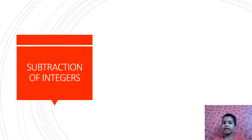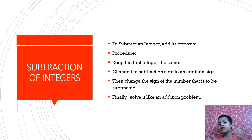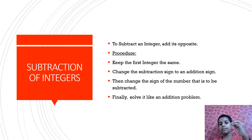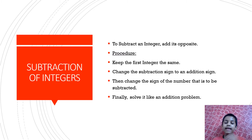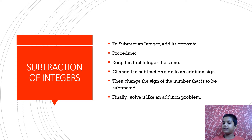Subtraction of integers. To subtract an integer, we need to find and add its opposite. The procedure is: keep the first integer the same, change the subtraction sign into an addition sign, then change the sign of the number that is to be subtracted. Finally, solve it like an addition problem. This is simple and need not be confused. You can watch it again to understand.